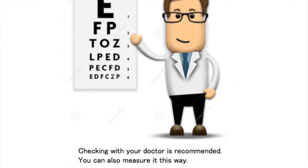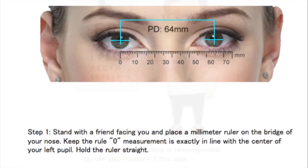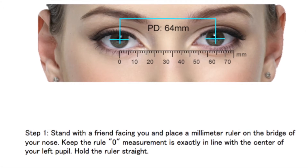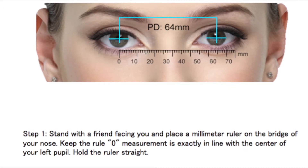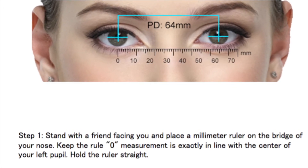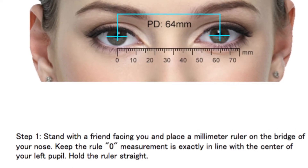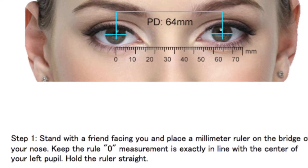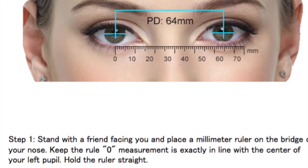You can also measure it this way. Step 1: Stand with a friend facing you and place a millimeter ruler on the bridge of your nose. Keep the ruler so that the 0 measurement is exactly in line with the center of your left pupil.